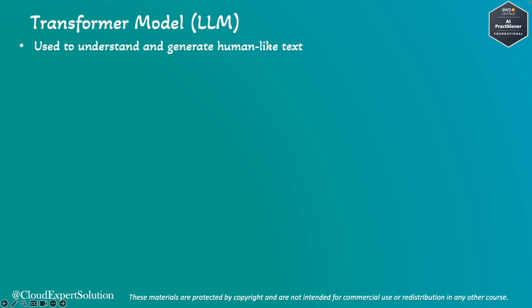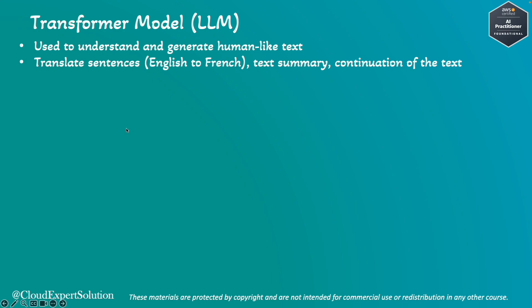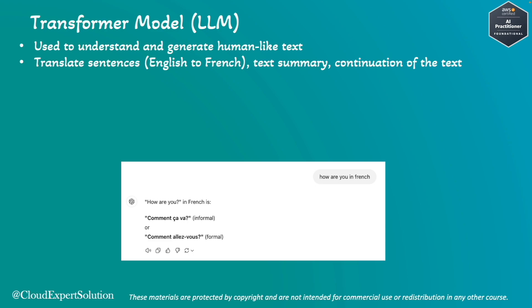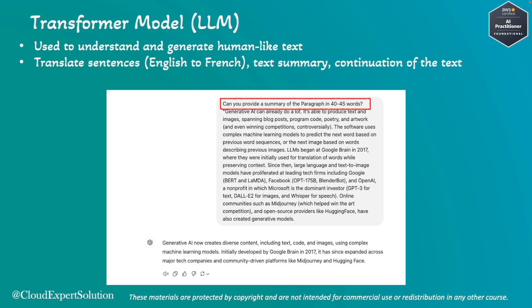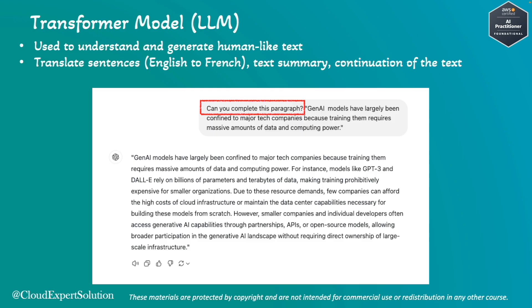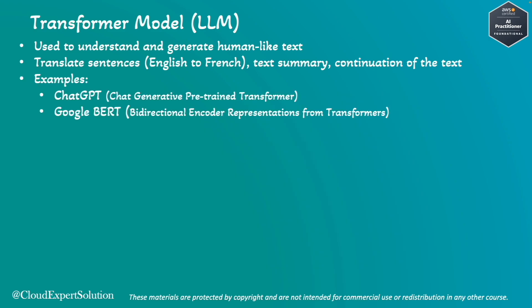Transformer models are used to understand and generate human-like text. They can also be used to translate sentences — for example, from English to French. If you have written 'how are you' and you want to translate that to French, ChatGPT can easily do that. Or maybe you have given a paragraph and you want a text summary, or you have written one line and want to continue in the same format and complete the paragraph. These kinds of tasks can be easily done using a transformer model.